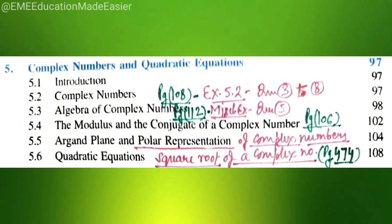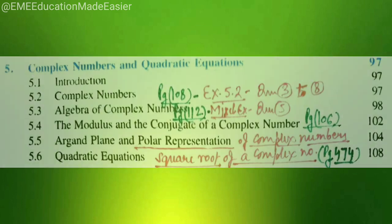And on page 112, we have miscellaneous exercise, question number 5 removed. You need not to do question number 5 from miscellaneous as well. And as regards to square root of a complex number, we have a supplementary exercise at the back of this book on page 474. So, only one type of question, square root of complex number, so this has also been removed.